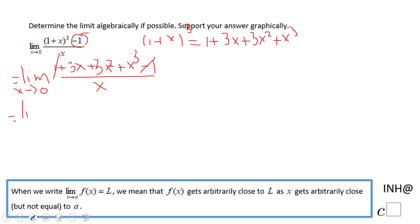So what we have left is 3x + 3x² + x³, this is the numerator of this rational expression over x.